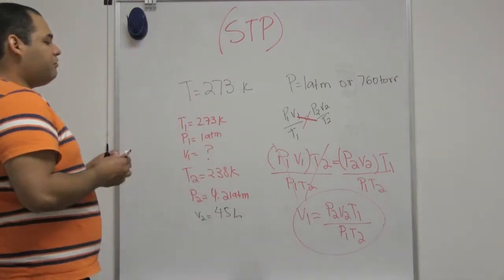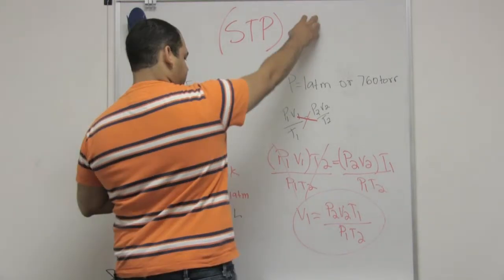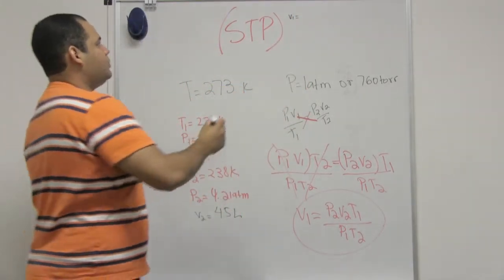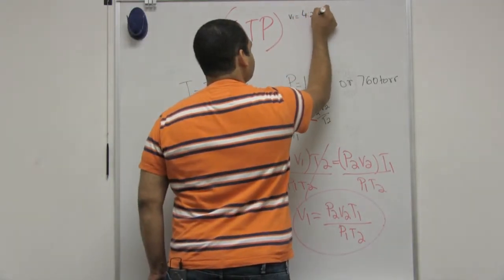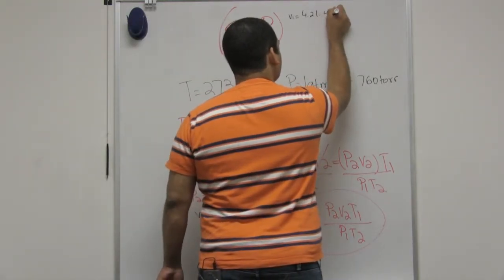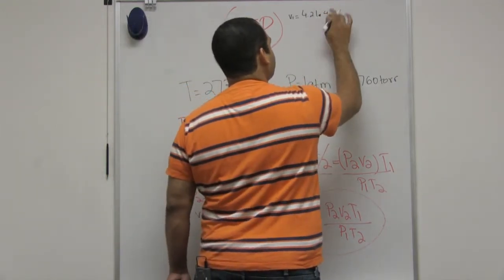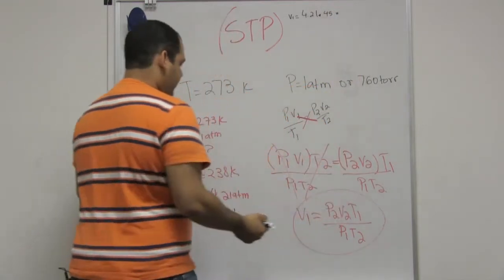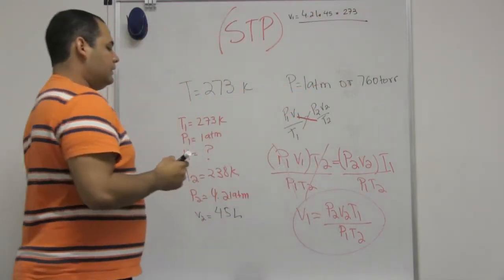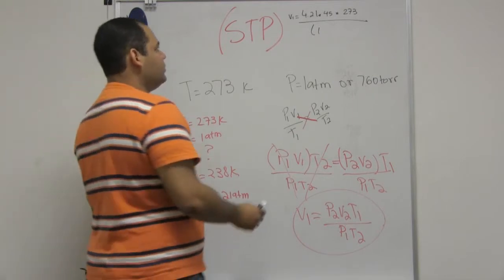Now that I rearranged my formula I can plug in the numbers. So V1 would be equal to pressure 2, 4.21, times volume 2, 45 liters. And temperature 1 is 273, divided by pressure 1, 1 atm, and the temperature 2 is 238.